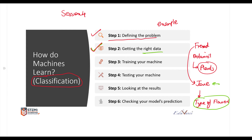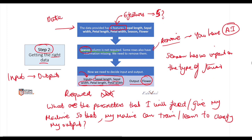Let us revise: step number one was defining the problem — classifying the type of flower based on sepal length, sepal width, petal length, and petal width. Step number two was getting the right data, which had three parts: getting the data, finding out which columns are not necessary, and deciding what would be your input and output.